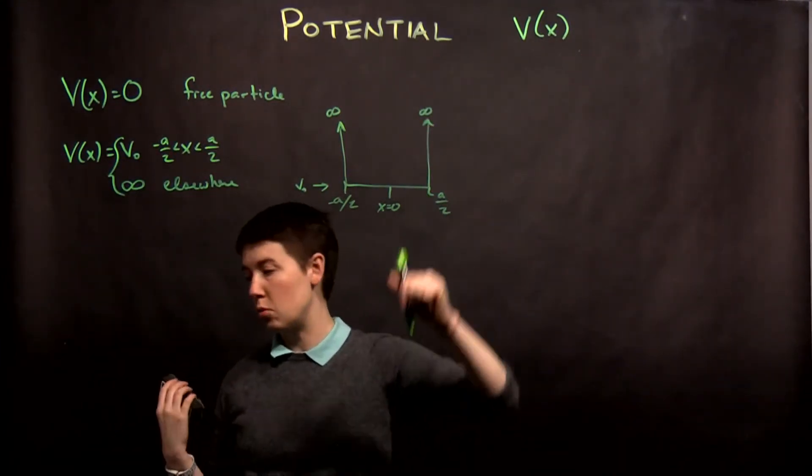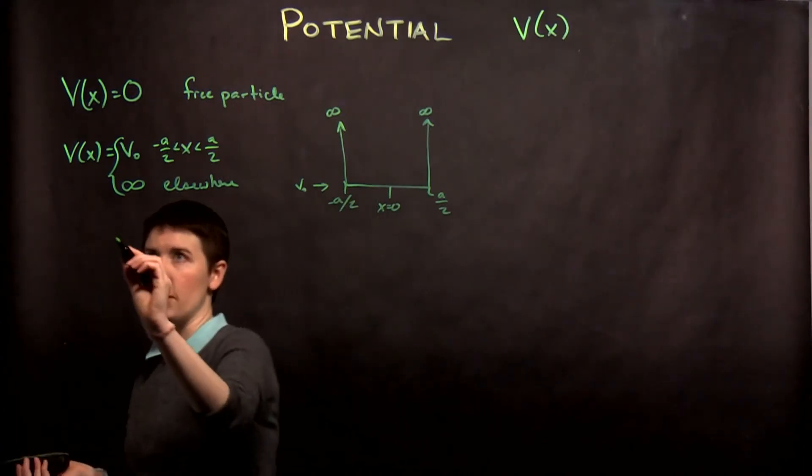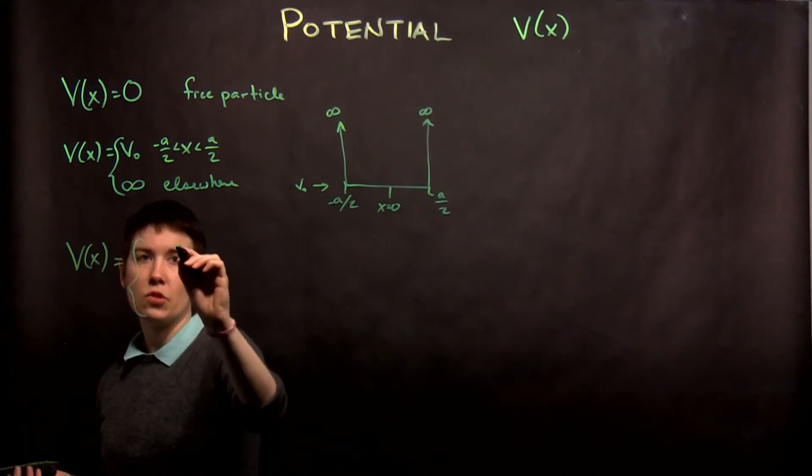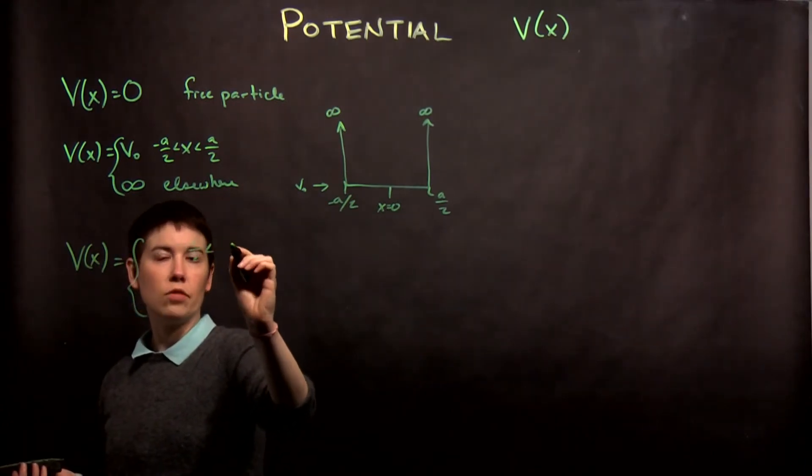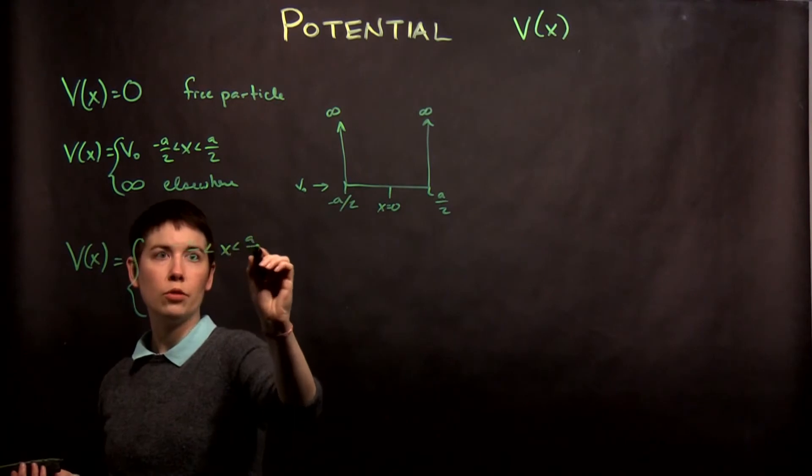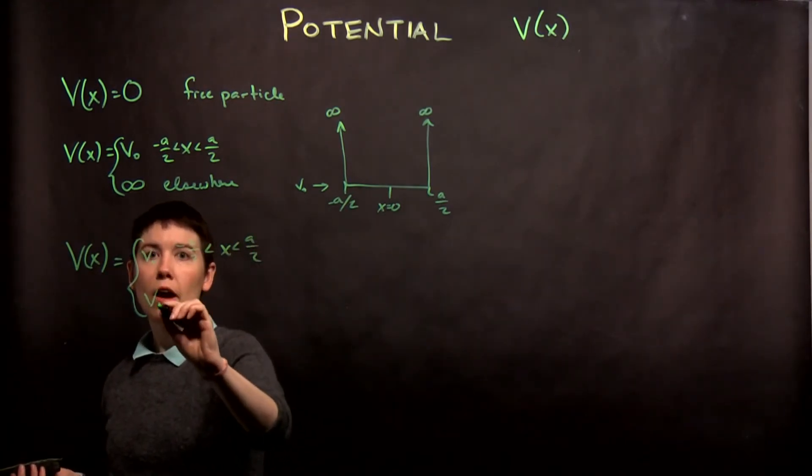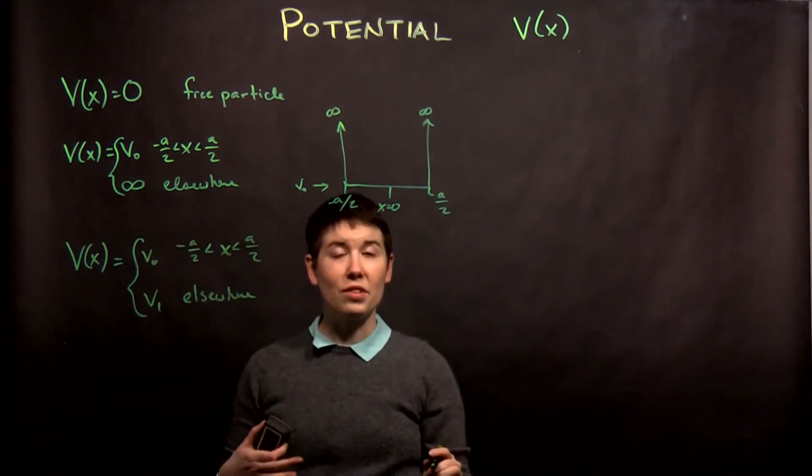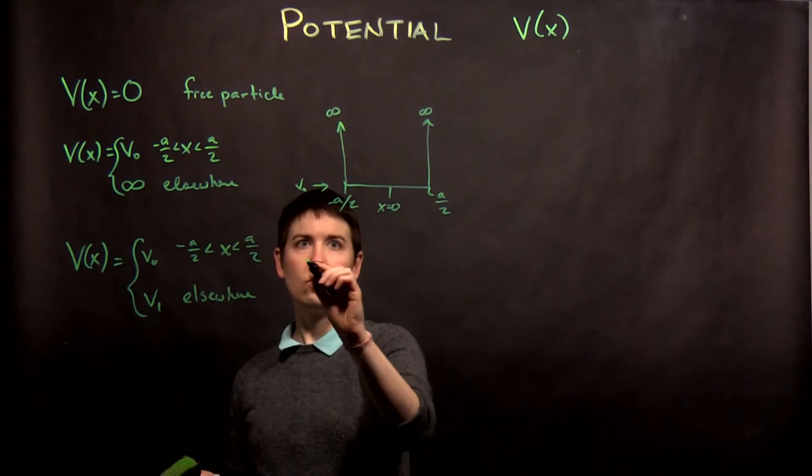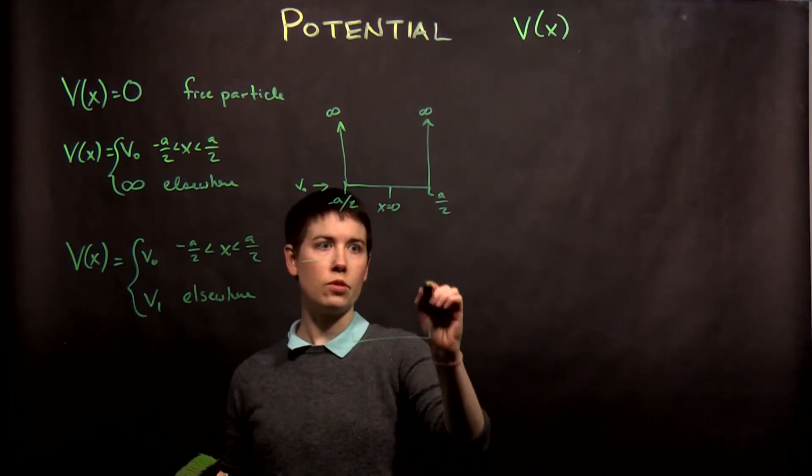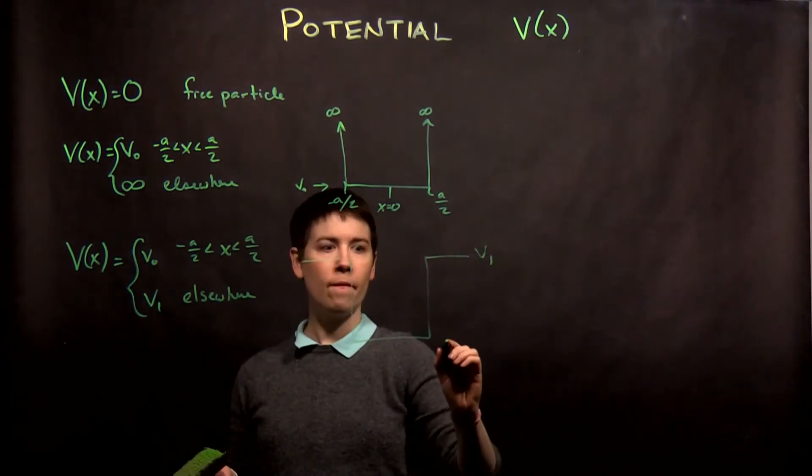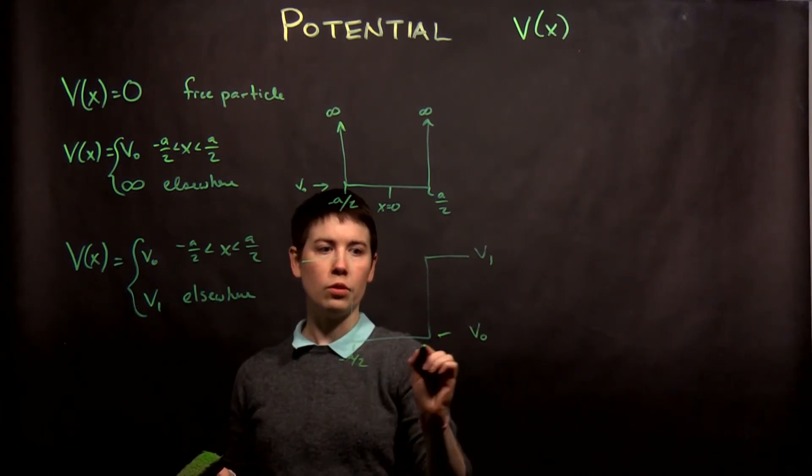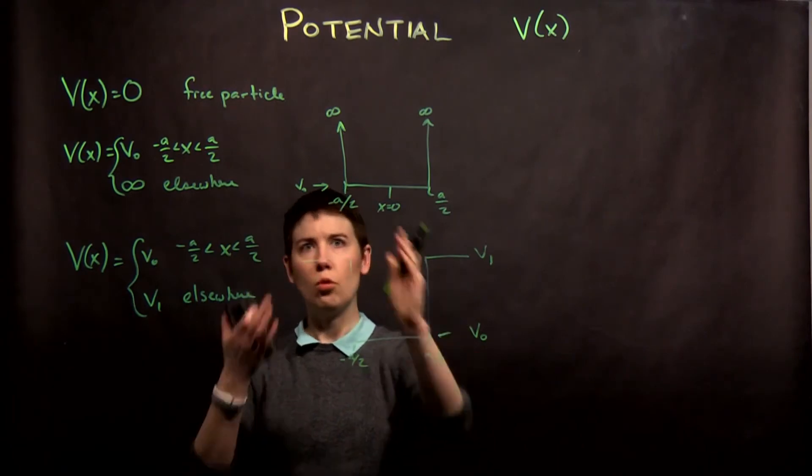So a different version is that we have some region, and I'll just keep it consistent, call it negative a over two, a over two, where this is, for instance, V zero and then V one elsewhere. So this is going to be our non-infinite square well. So again, we have some region, but here we have V one, and here we have V zero. And again, this is going from negative a over two to positive a over two, or zero to l.